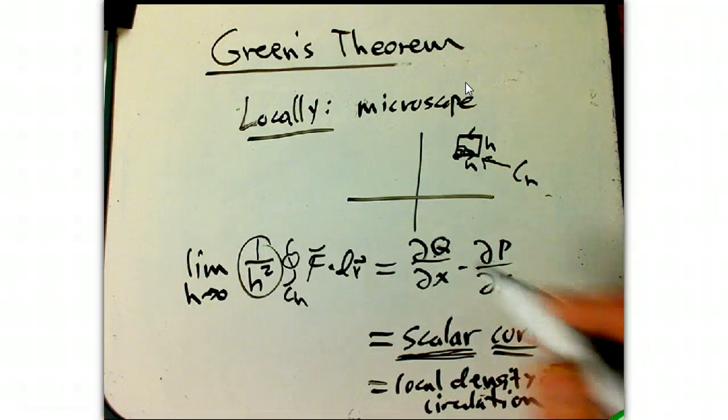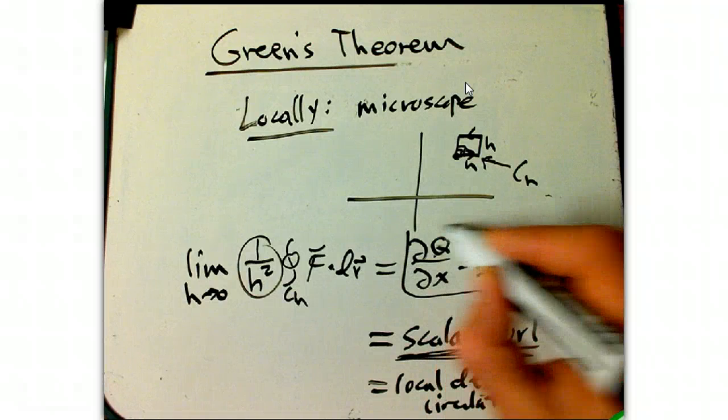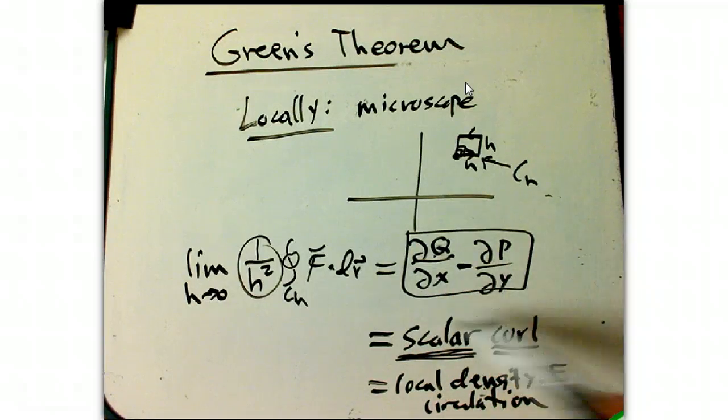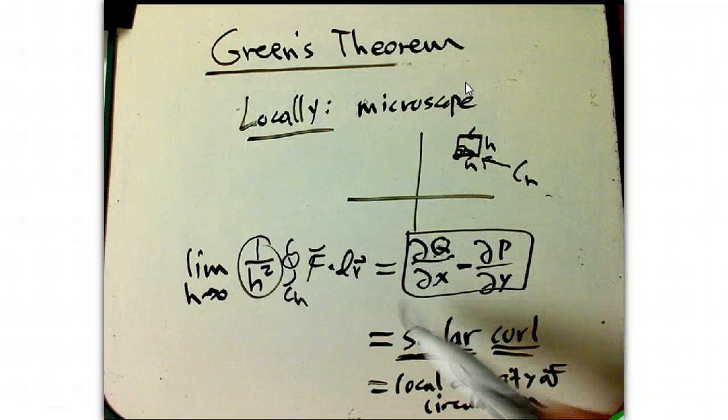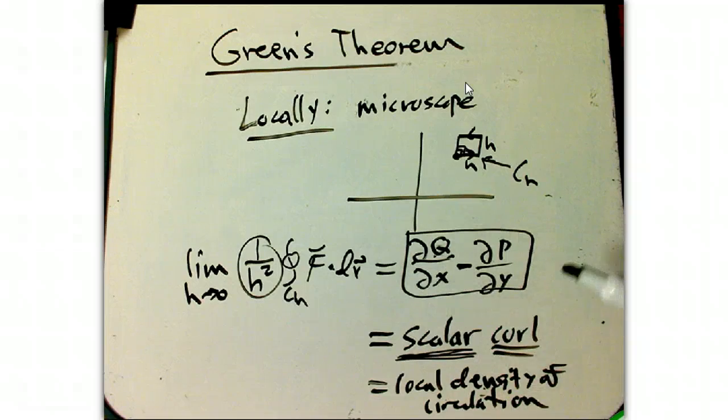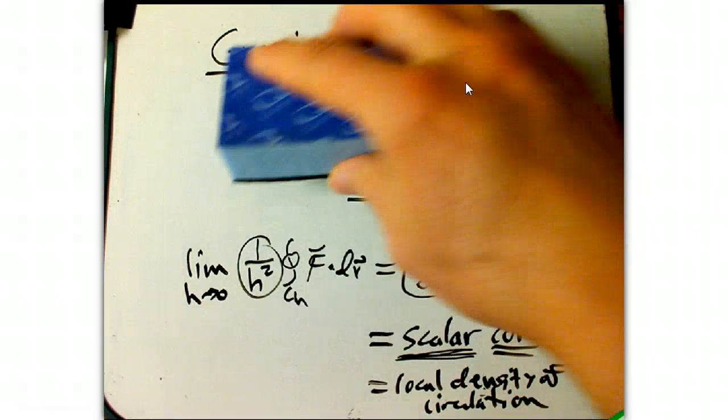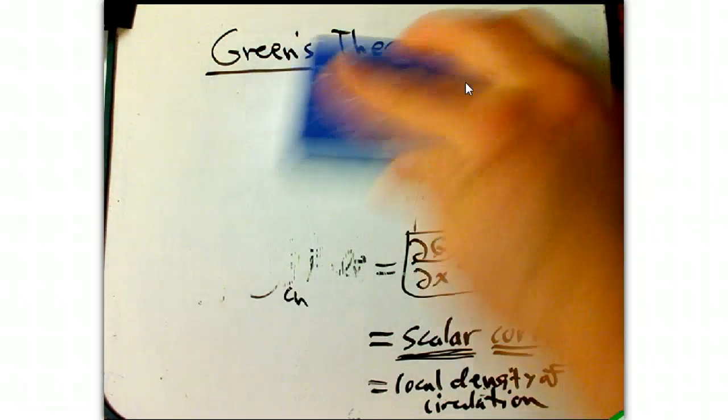And it turns out, you can show, we're going to show it in our class two ways, that it gives you this interesting combination, very simple combination of the partial derivatives of q and p, of the components of f. Okay. So, I claim that just knowing this local result, basically, is going to give us a way to prove Green's theorem.